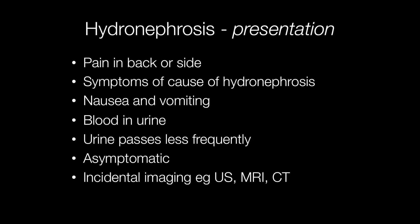Hydronephrosis may present in a number of ways. It may be asymptomatic or incidentally found on imaging such as ultrasound, MRI or CT. It may also present with pain in the back or side, the symptoms of the underlying cause, nausea and vomiting, blood in the urine, and urine may be passed less frequently.